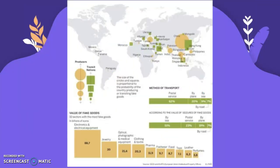This shows the flows of counterfeit goods. The largest producers of counterfeit goods are China, Turkey, India, Thailand, Philippines, and Malaysia. Then there are transit nations as well.